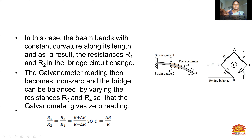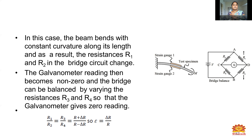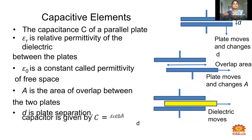The galvanometer reading then becomes non-zero, and the bridge can be balanced by varying resistances R3 and R4 so that the galvanometer gives zero reading. The balance condition is R1 divided by R2 equals R3 divided by R4, which equals (R plus delta-R) divided by (R minus delta-R). Epsilon equals delta-R divided by R — that is, the change in resistance divided by the original resistance.